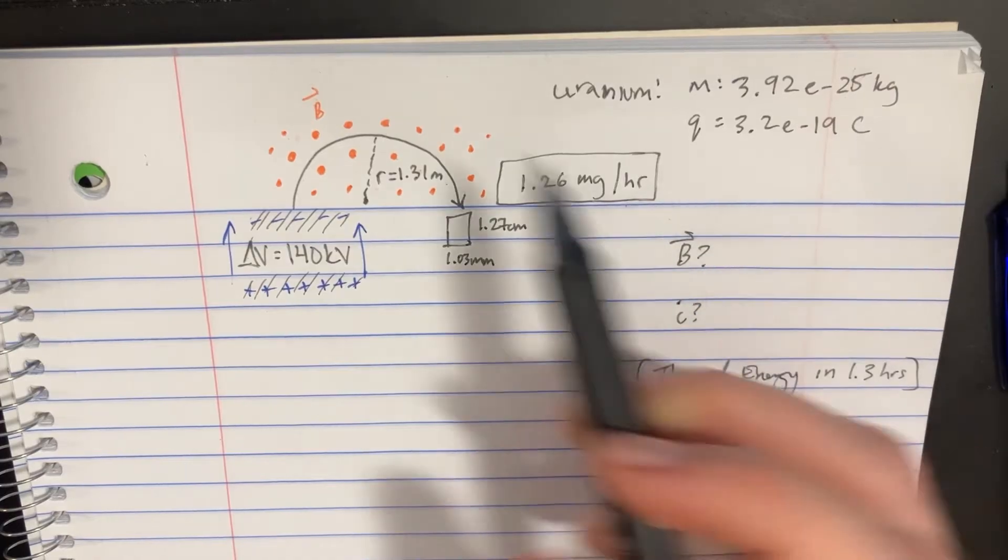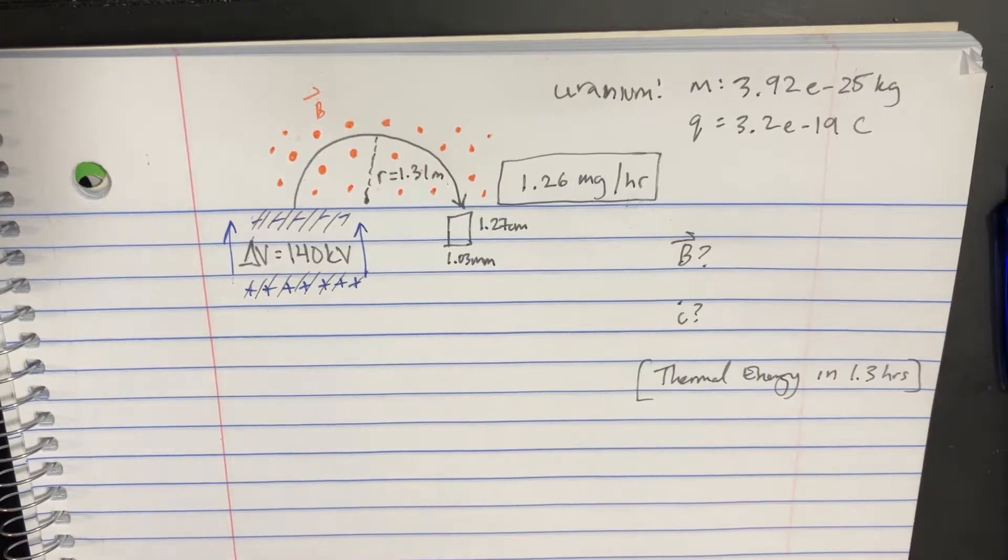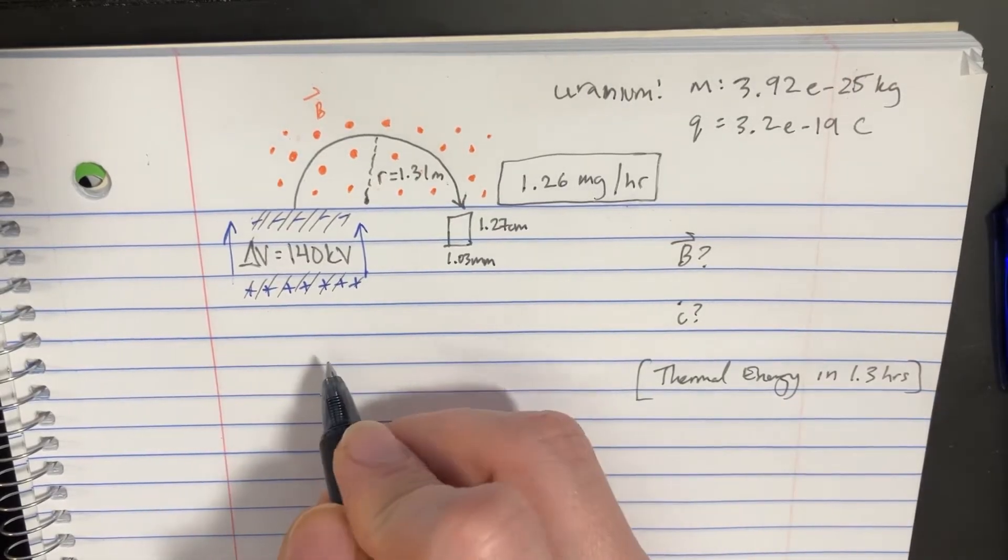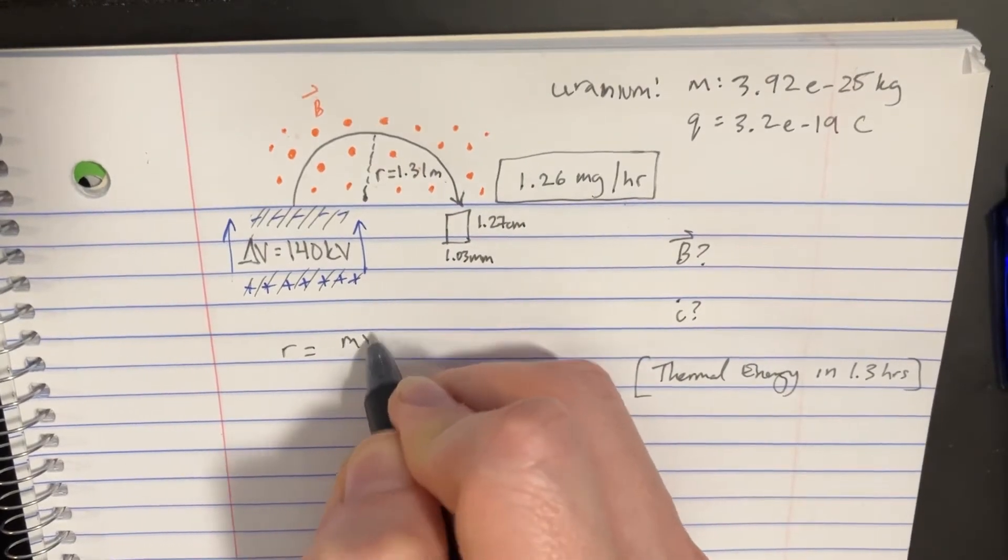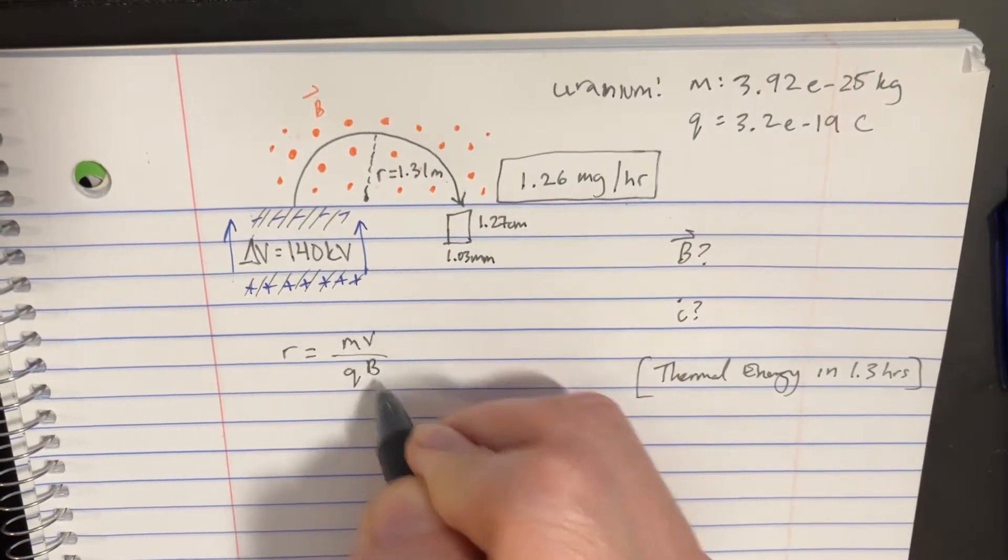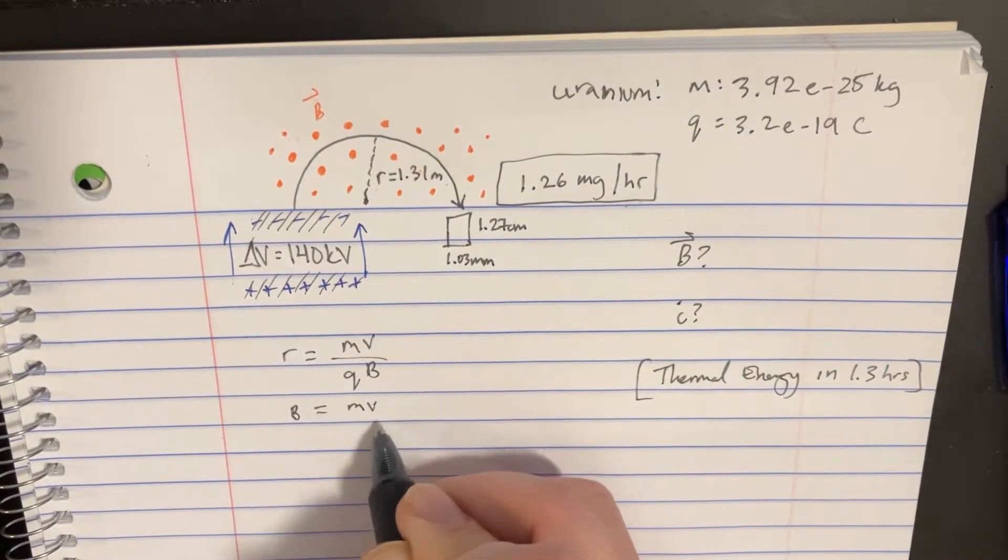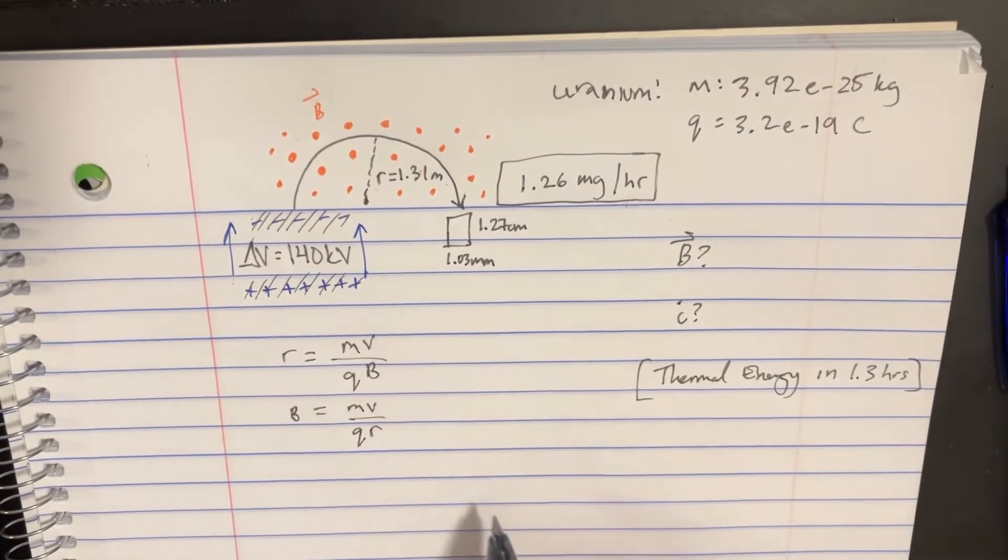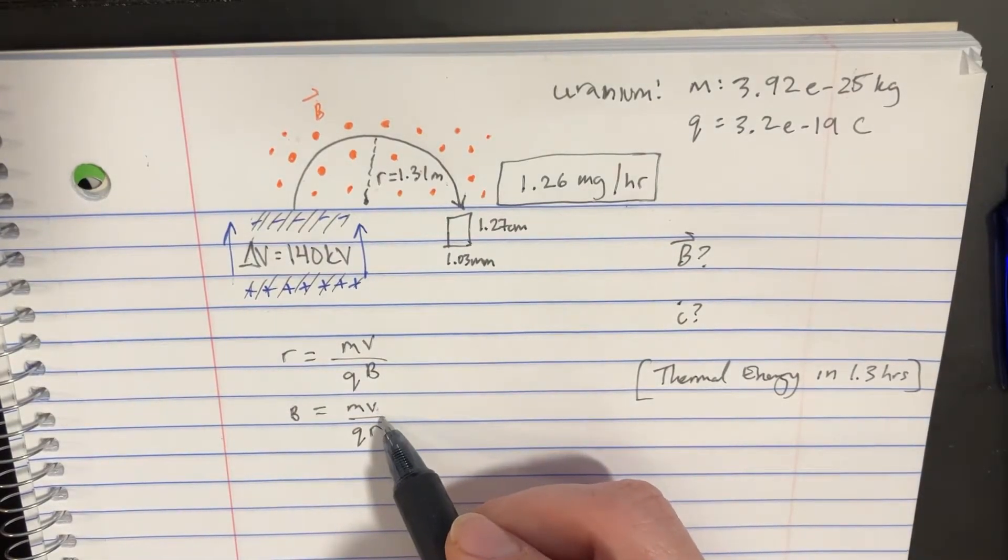First, what is that magnetic field? In order to do that we're going to use the radius equation and say that r equals mv divided by qb. We can rearrange that and say b equals mv divided by qr. We should be able to figure this out but we have to figure out what the velocity is as well.